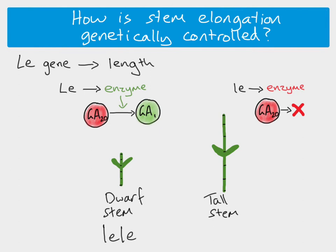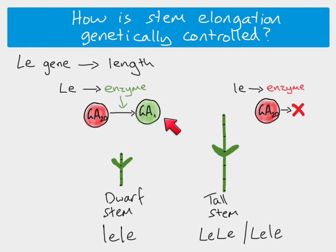However, if a plant is homozygous dominant or heterozygous, and therefore still has at least one dominant allele, it will produce the functional enzyme and therefore produce active gibberellin, resulting in a tall stem.